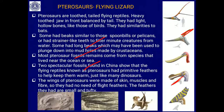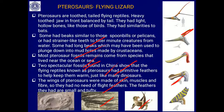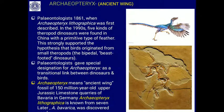Most pterosaur fossils come from areas near oceans and seas. Two spectacular fossils found in China show that pterosaurs had primitive feathers. The wings of pterosaurs were made of skin, muscles, and fiber — flight feathers were absent; only body-covering feathers were found. The wings were made of membranous skin. Also visible is the egg of the pterosaur. Next we move to Archaeopteryx, called the 'ancient wing.'